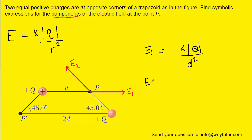We'll write a similar expression for E2: E2 = k times |Q| divided by the distance from that charge to point P, squared. However, that distance is not marked on the diagram, so our challenge becomes finding it.